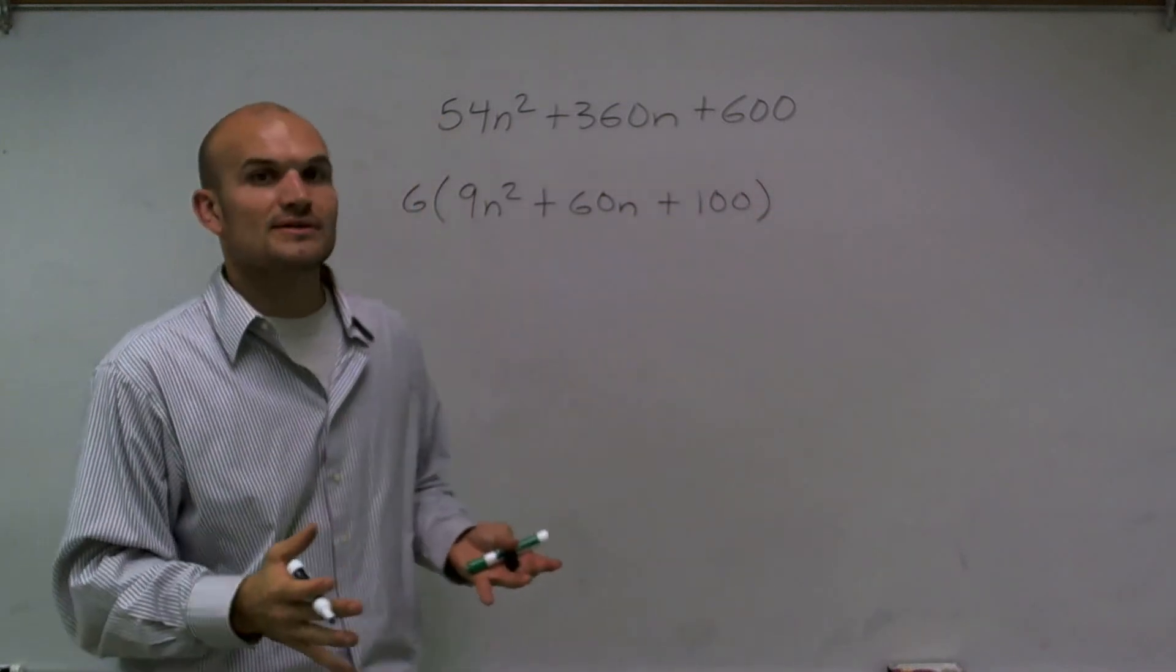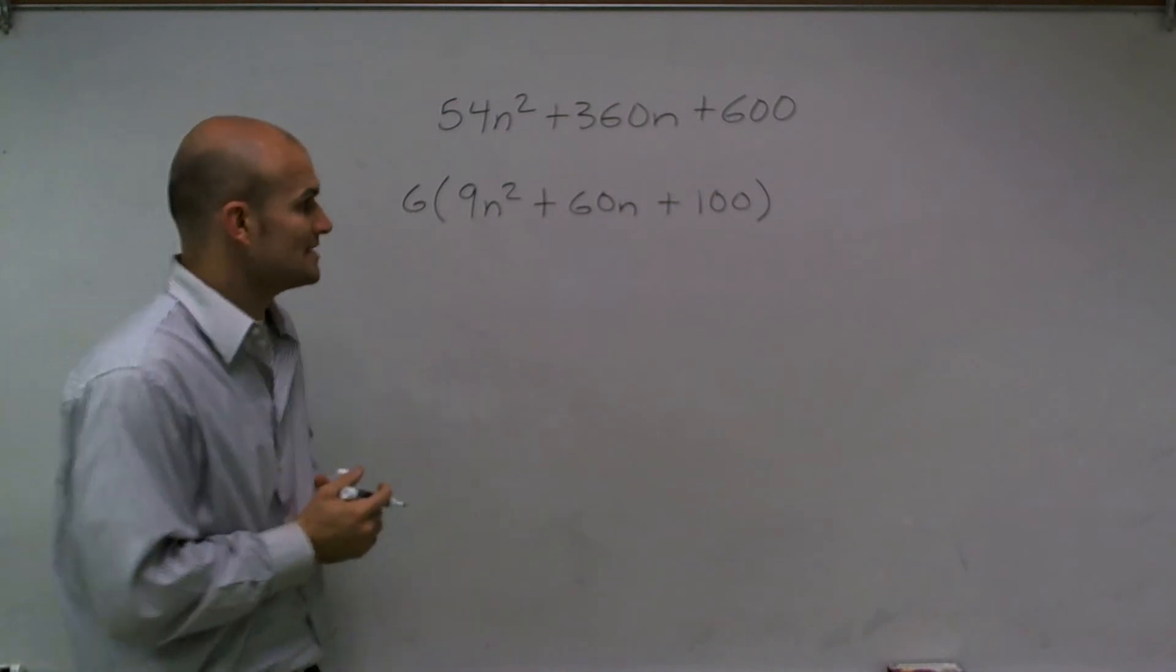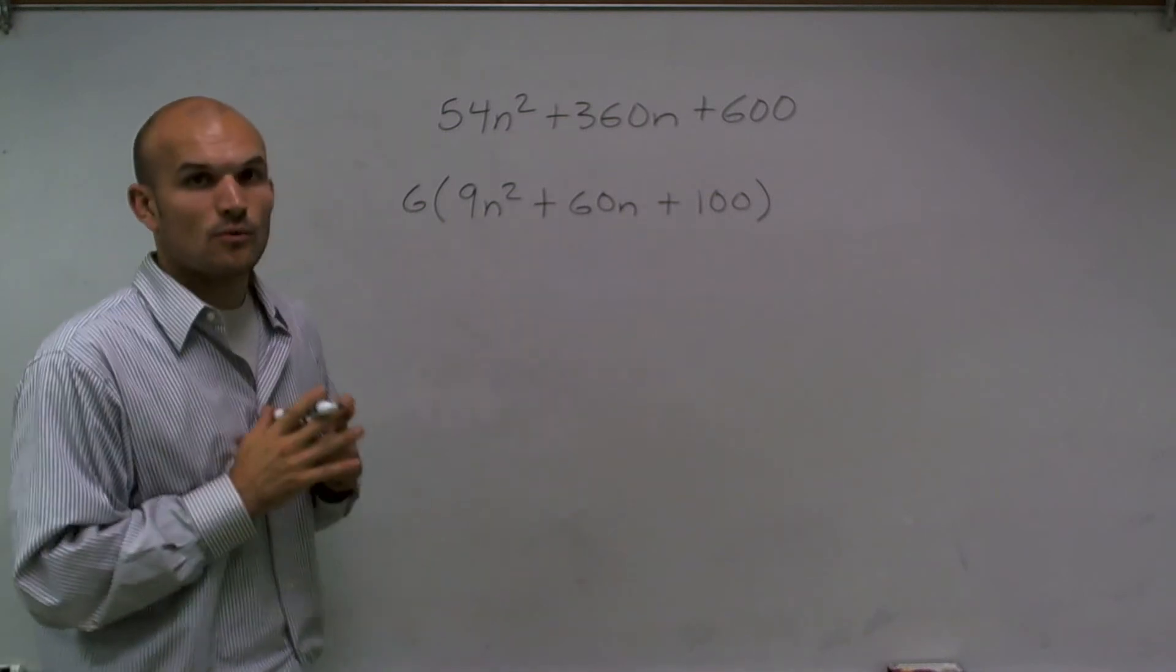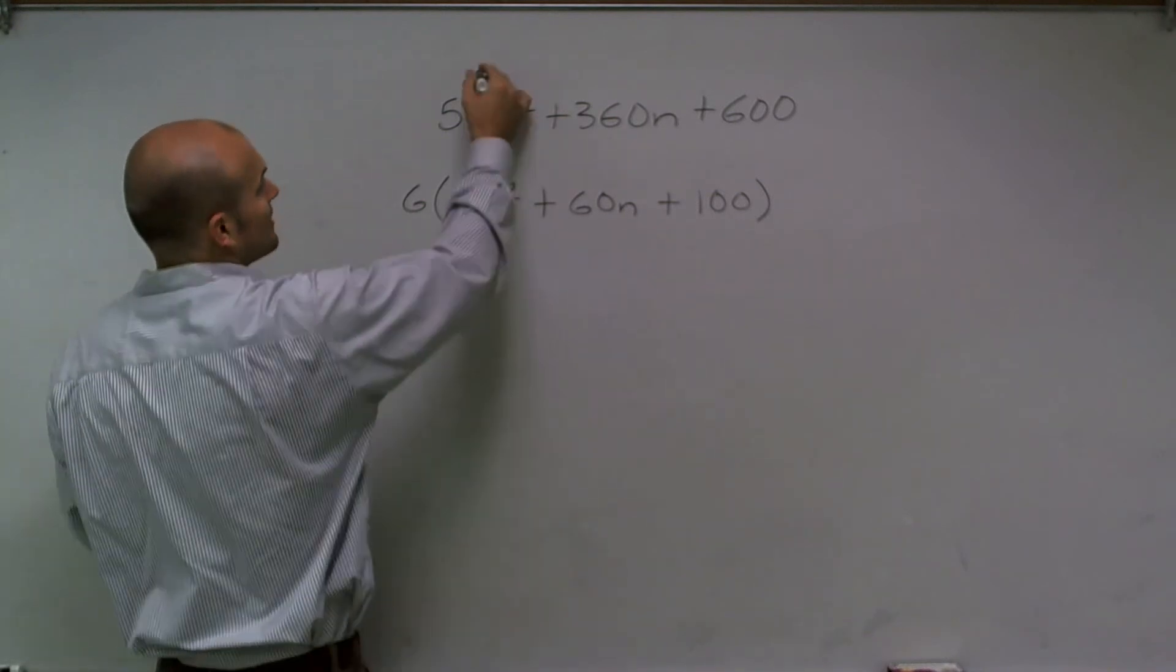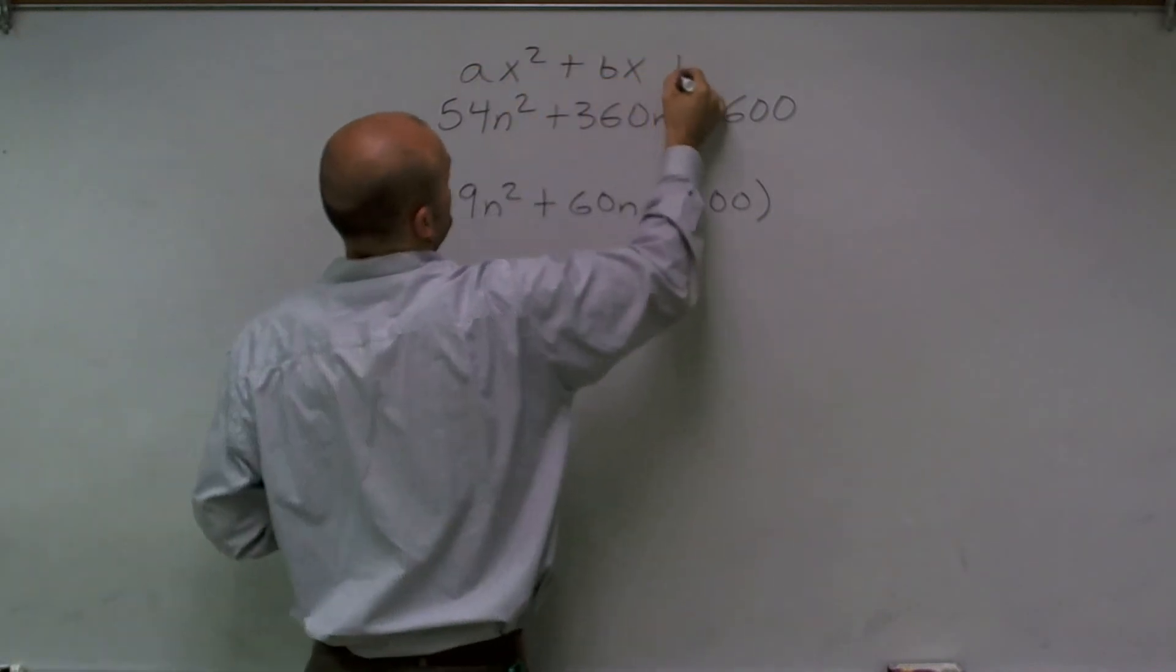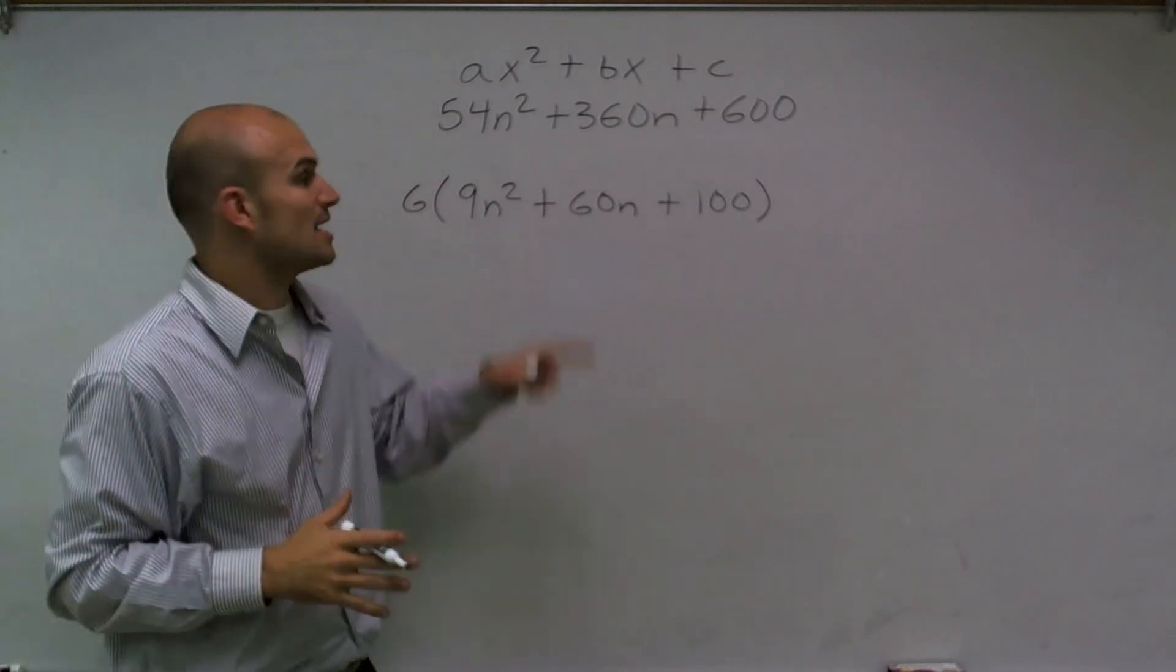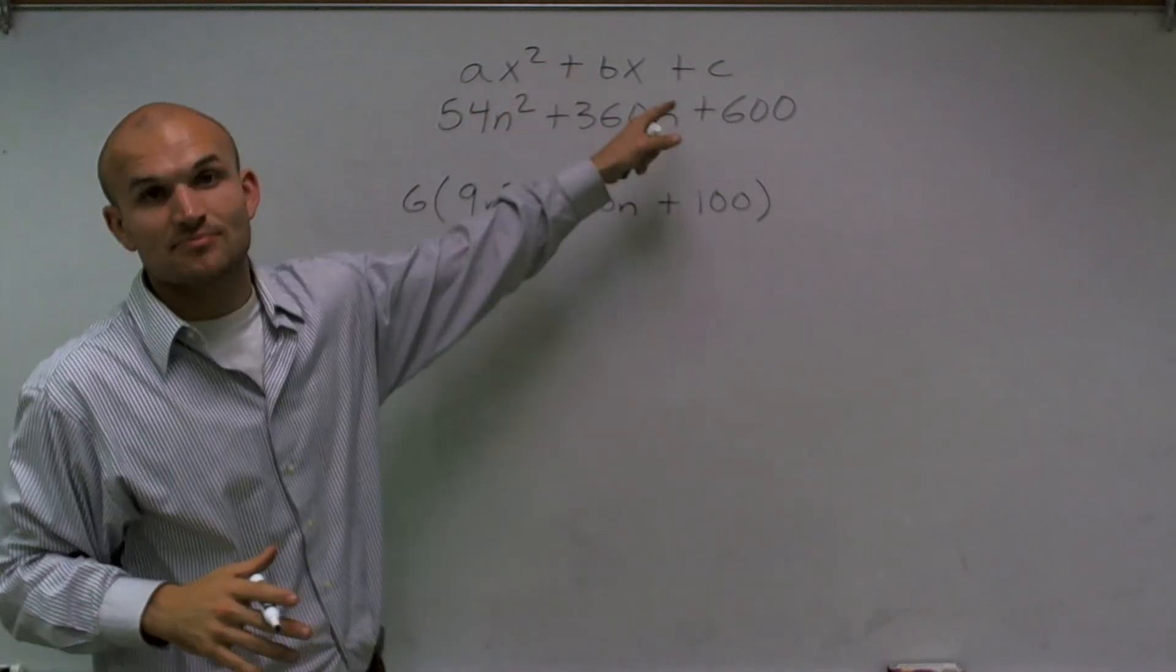So now the next thing I'm going to do is I'm going to factor, and I'm going to use a little box method to show you my factoring. One thing we need to remember when we're dealing with factoring is we need to understand that when factoring a trinomial, especially in the quadratic type, we have ax squared plus bx plus c.